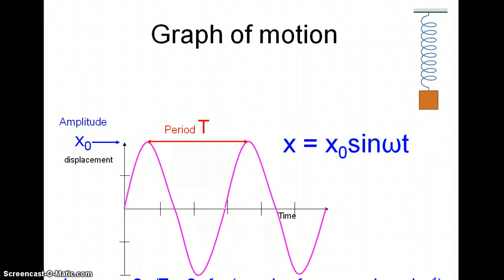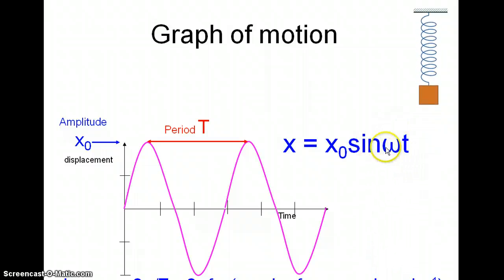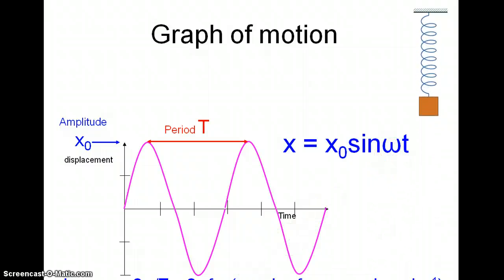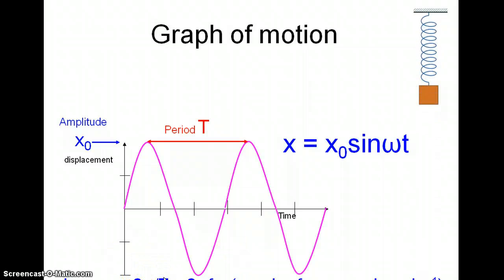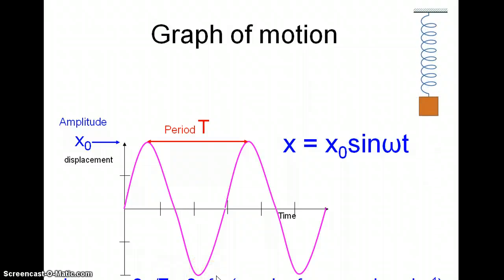So if we want to graph this motion, this is the function that we can use. t is the period. This quantity here — lowercase omega — represents something called the angular frequency. The angular frequency is equal to 2 pi divided by the period — that's in your data booklet — or 2 pi times the frequency of oscillation, which is not in the data booklet. But of course you know that period and frequency are reciprocals of each other, so it should be fairly easy to figure that out.